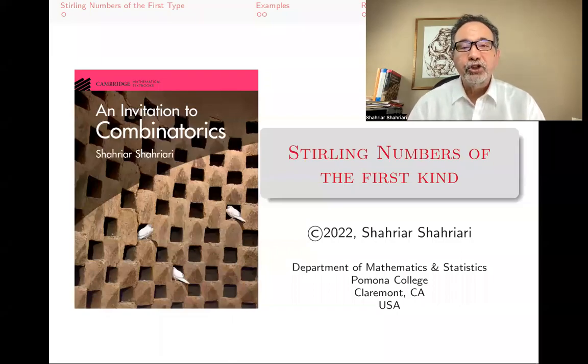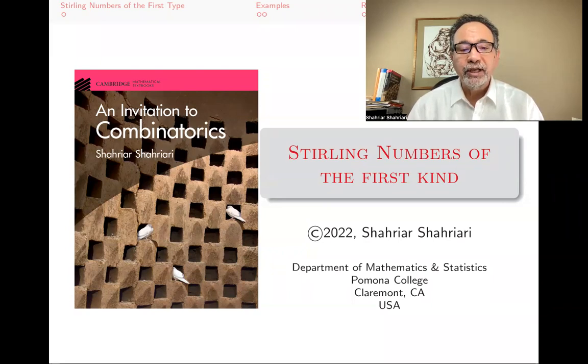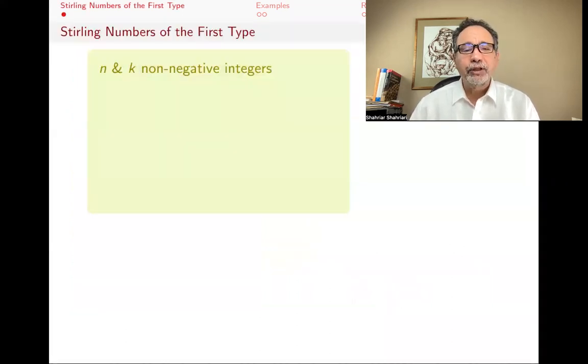Hello, my name is Shahyar Shahyari, and this is a lecture in a series of lectures on introductory undergraduate combinatorics based on my book, An Invitation to Combinatorics. The subject of this lecture is the Stirling numbers of the first kind. So let's get started, and I will tell you what these Stirling numbers of the first kind or first type are.